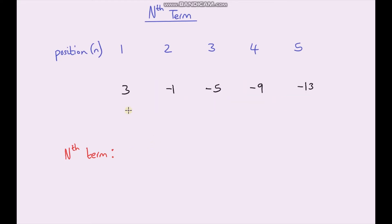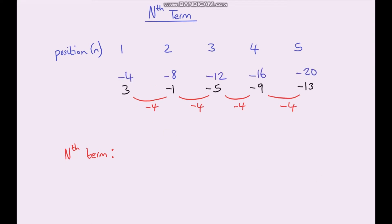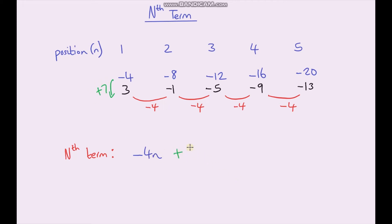Let's do one more to finish off — pause the video and have a go. To go from 3 to negative 1 we're subtracting 4, so let's do our negative 4 times table. The adjustment to go from negative 4 to positive 3 is adding 7, and I only need the first adjustment to write down my nth term. Because we're using our negative 4 times table it's going to be negative 4n, and because the adjustment is plus 7, it's negative 4n plus 7.